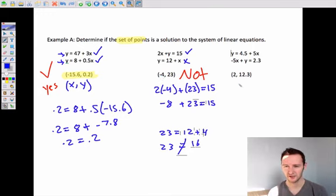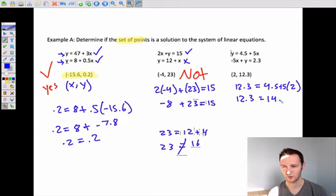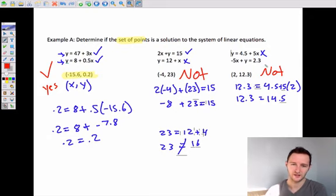All right, and the last one here is 4.5 plus 10. That's 14.5. This is not true for that one. We don't even need to check the next one because we've already found that this solution does not work for this equation, and therefore it is not a solution, regardless of if it works for this second one. So that's the basic idea: we are looking for an x comma y, an x value and a y value, that makes both of these equations come out equal.